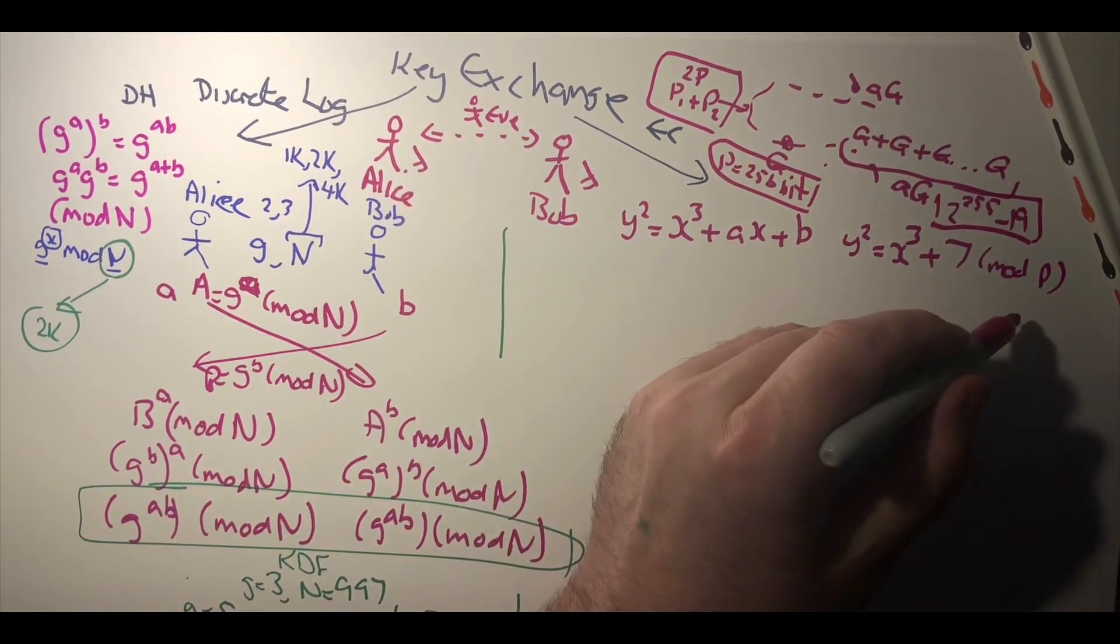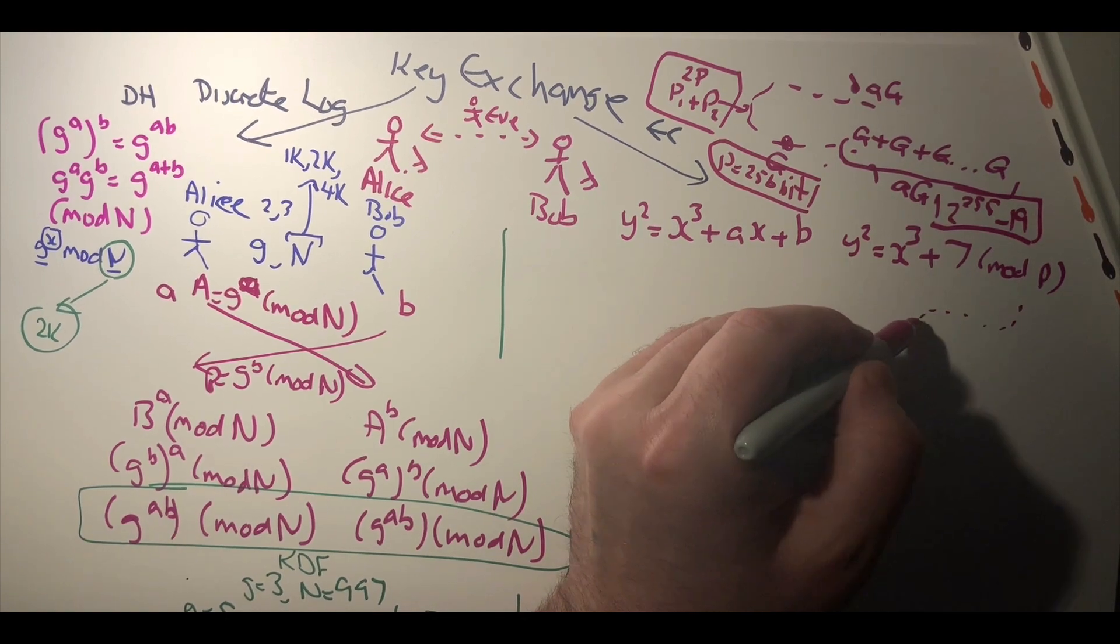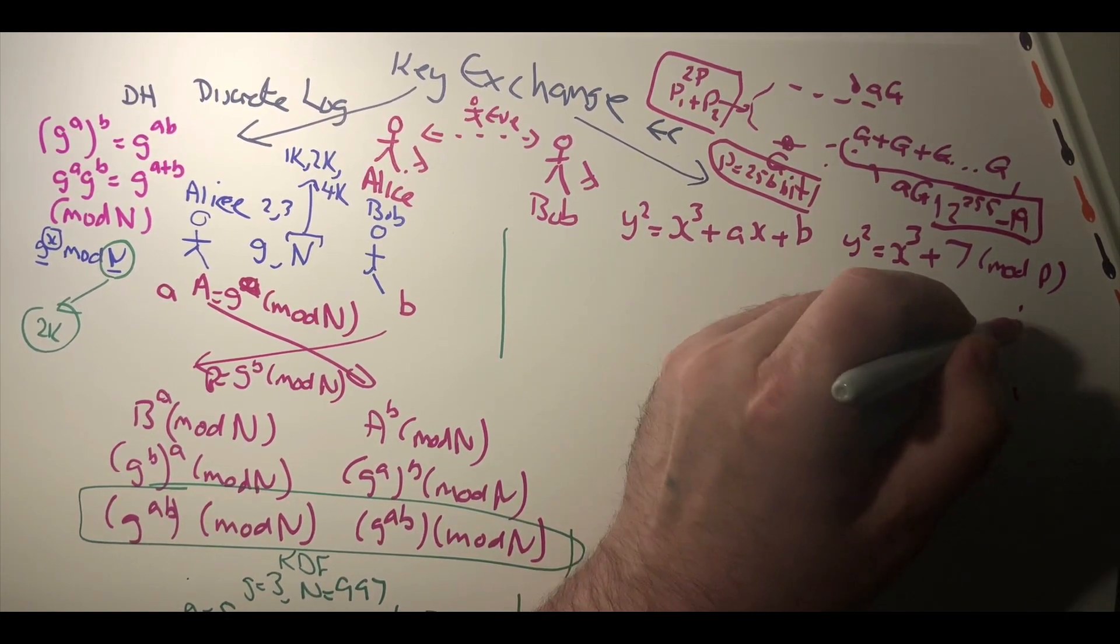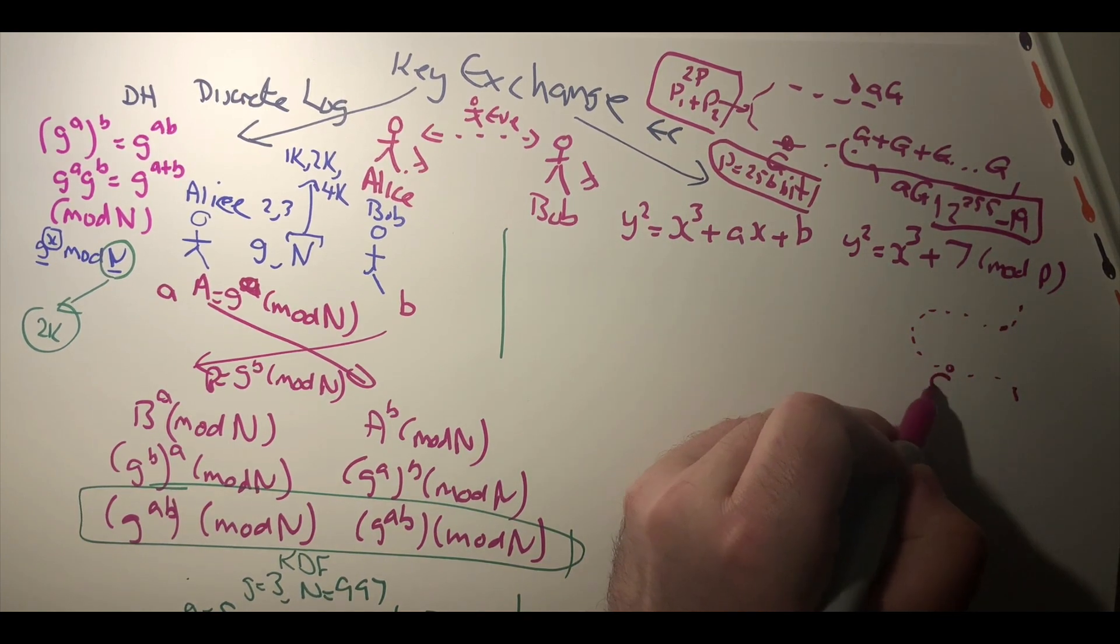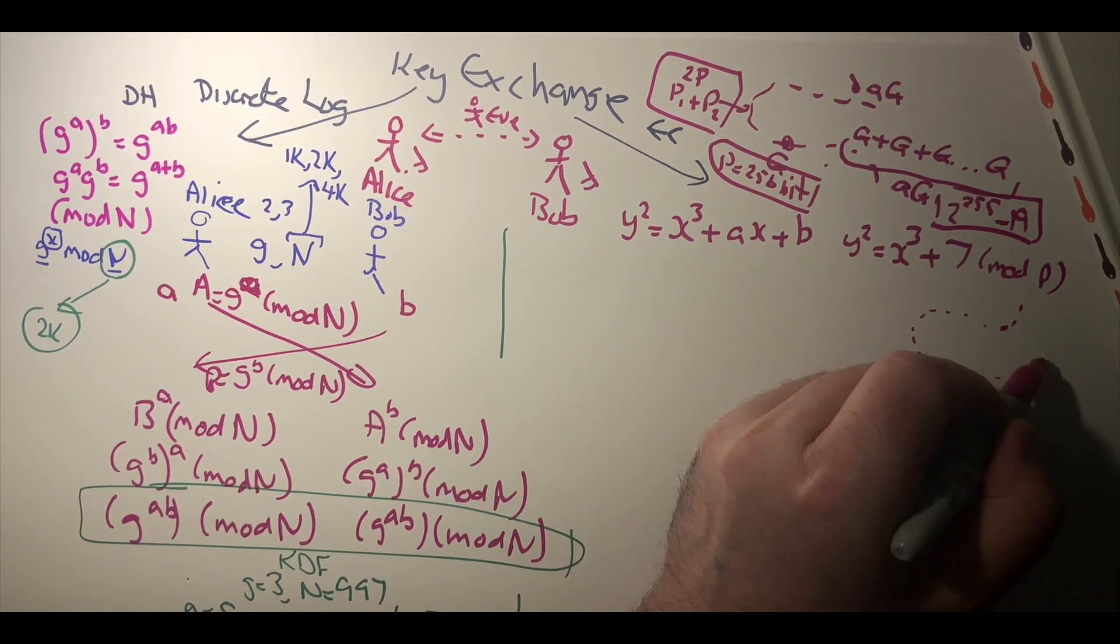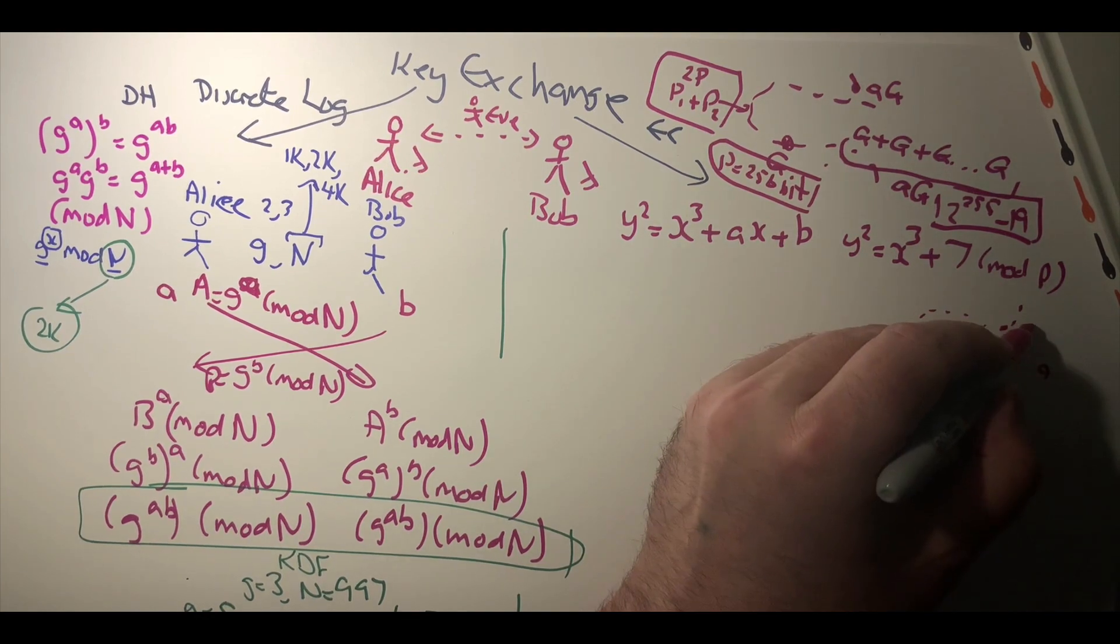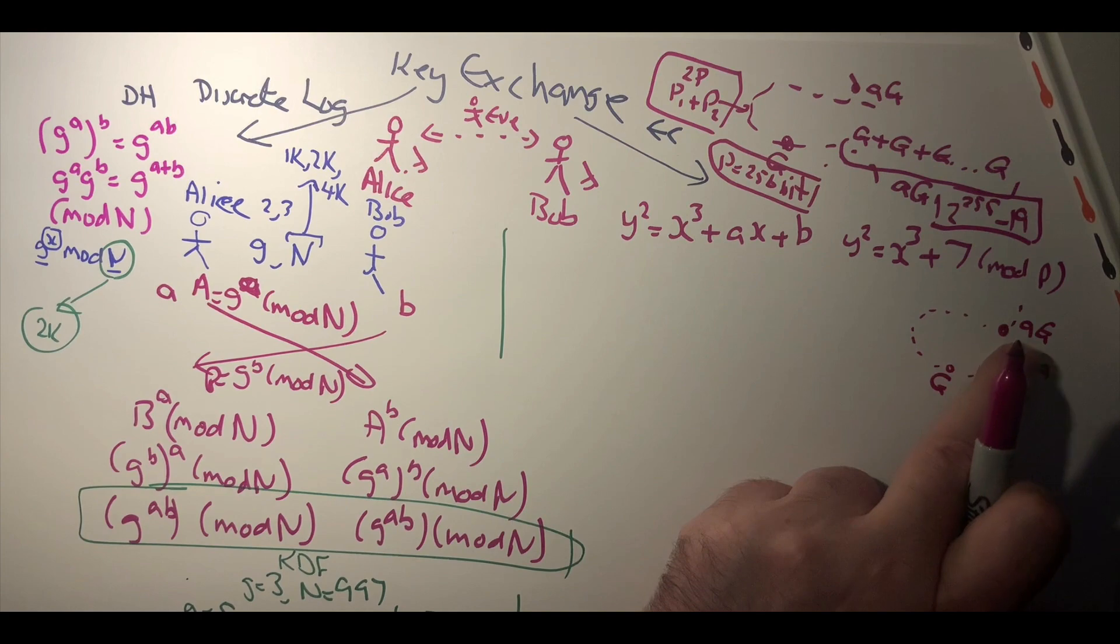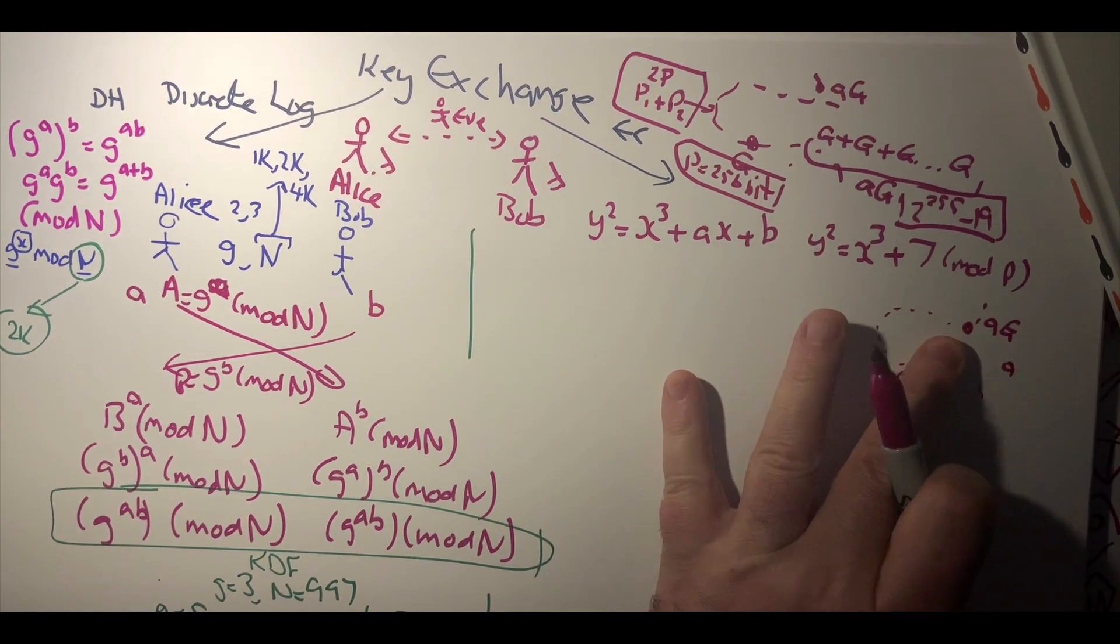Okay, so we end up with a curve and with our points, and we would typically define base point, a is the private key, and ag is the public key point. So that's a point on the elliptic curve.